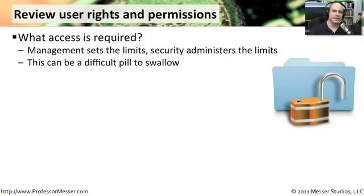Another way to mitigate risk is to make sure that people only have access to the resources necessary for them to do their job. Sometimes this access can be a difficult one — some people may feel they require more access to the network. You walk into some environments and almost everybody is an administrator on the network; other environments, maybe only one or two people are.